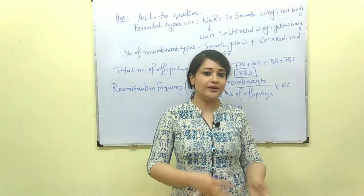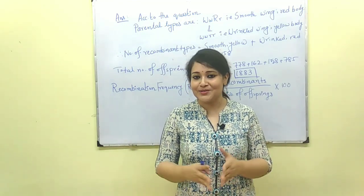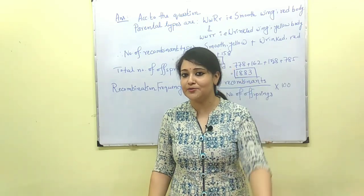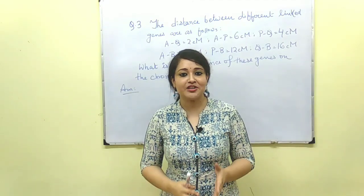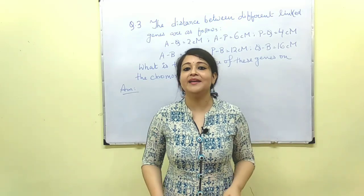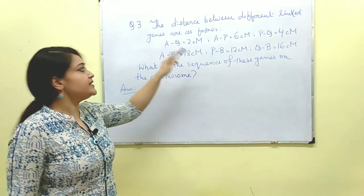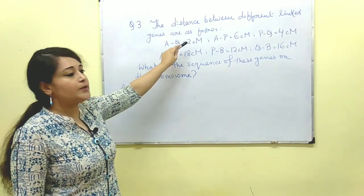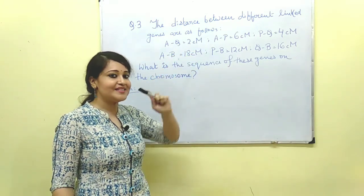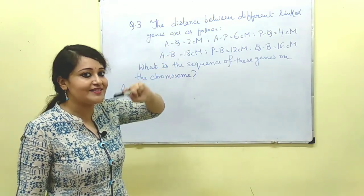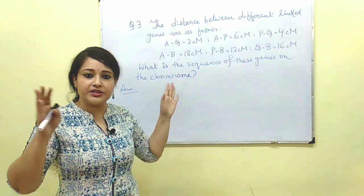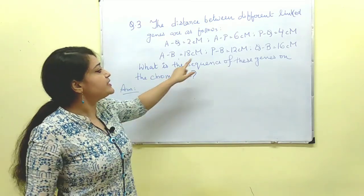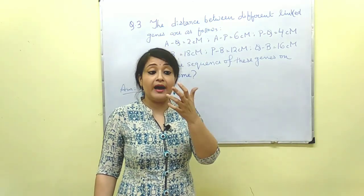I think now it is clear how to approach this kind of question. Question number three deals with linkage mapping — again a very important topic for your NEET exam. The distance between different linked genes are as follows: A to Q is 2 centimorgan (cM stands for centimorgan, with capital M), A to P is 6 centimorgan, and P to Q is 4 centimorgan. You have been asked what is the sequence of these genes on the chromosome.